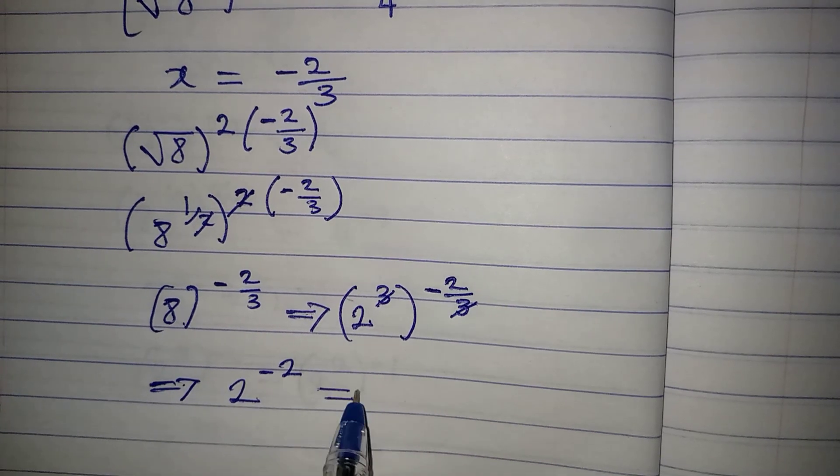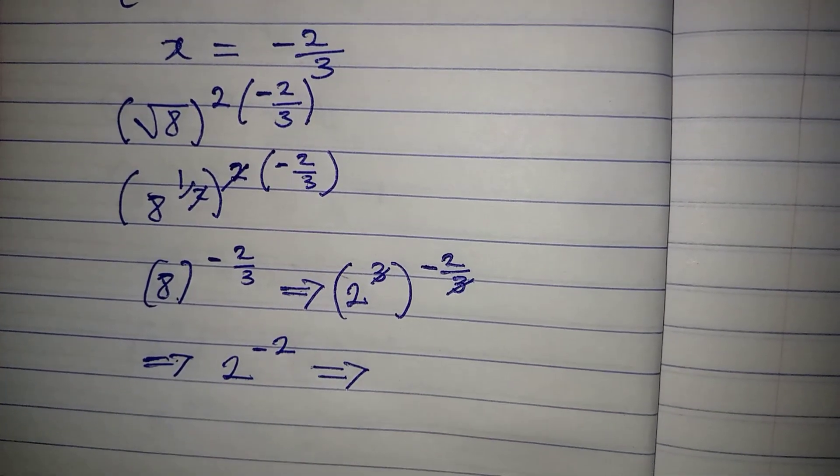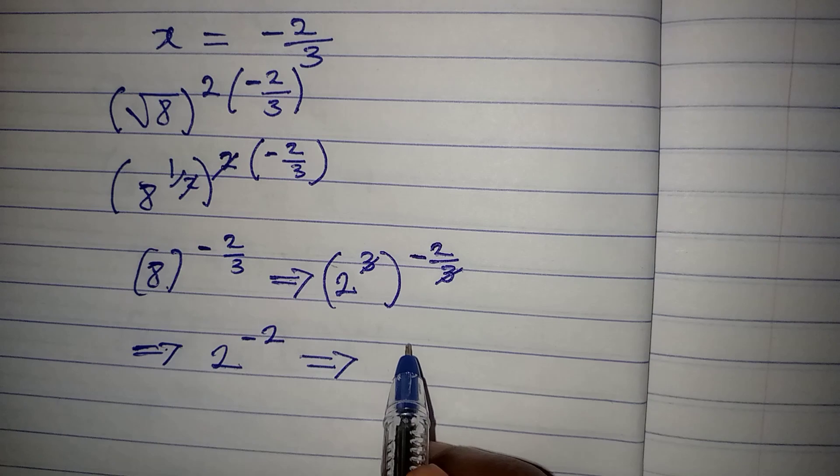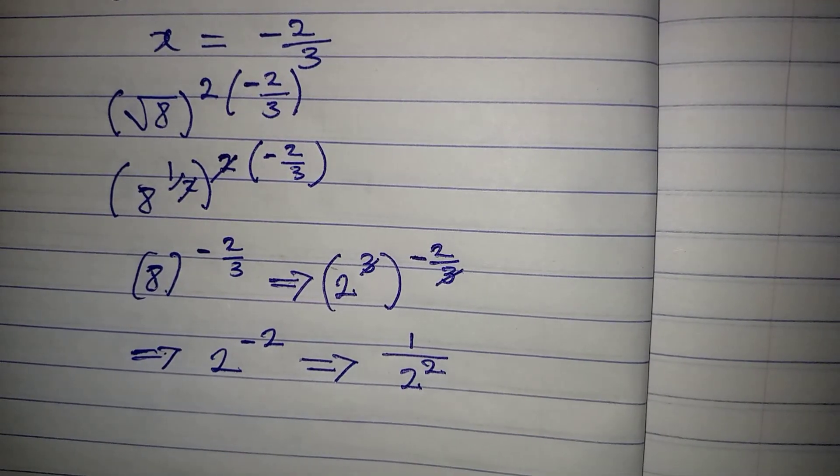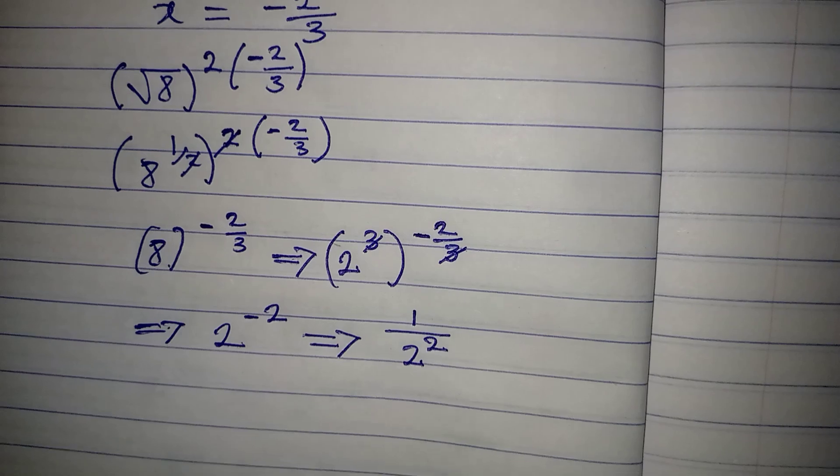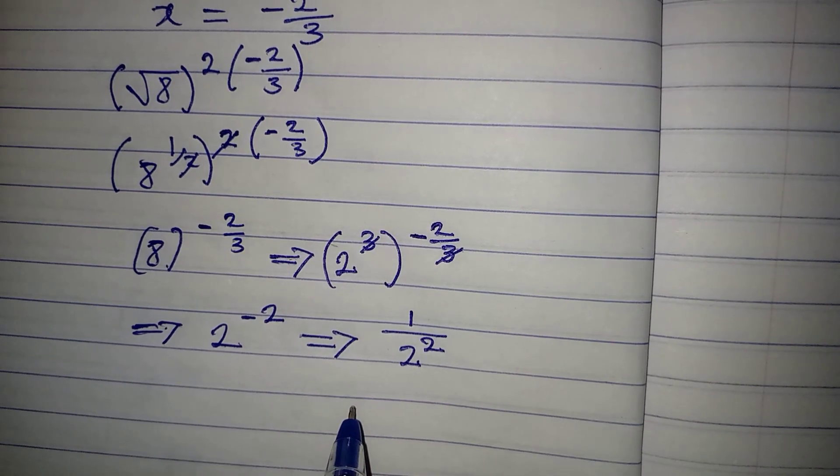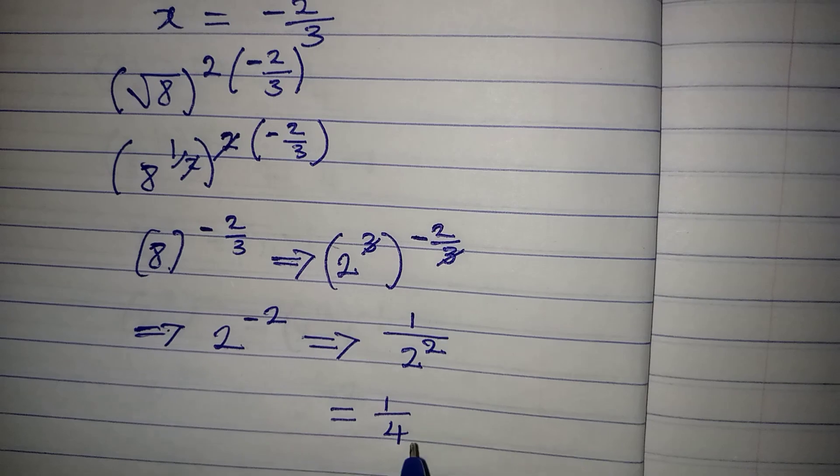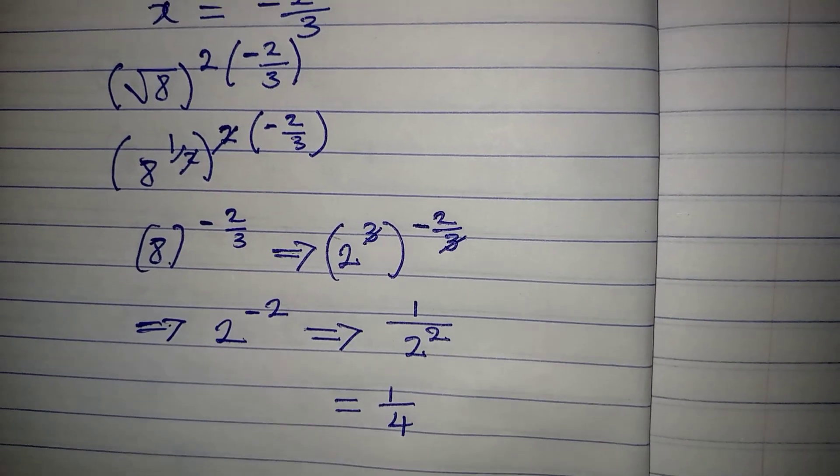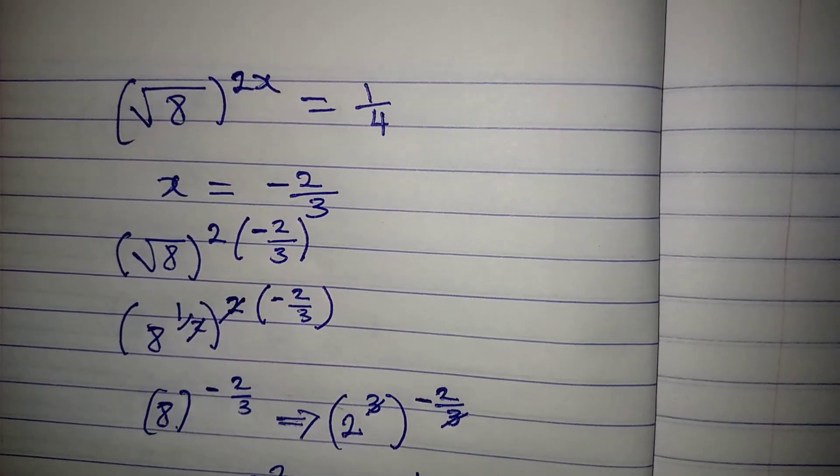And 2 to the power of negative 2, according to one of the laws of indices, is 1 over 2 to the power of 2. The negative has gone. And then, 1 over 2 to the power of 2 is the same as 1 over 4. And this is what we had on the right-hand side.